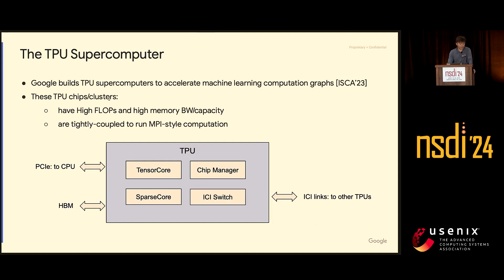This diagram shows a very high level of what a TPU is composed of — we published a paper on the hardware architecture at ISCA last year. We have a tensor core that processes matmul, dense matrix multiplication; a sparse core that handles sparsity embeddings and sparse matrix operations; and a chip manager, which is an ARM core on the chip that functions almost like an operating system of the accelerator. The CPU sends work to the TPU over PCIe, the TPU does the work, and sends the result back.